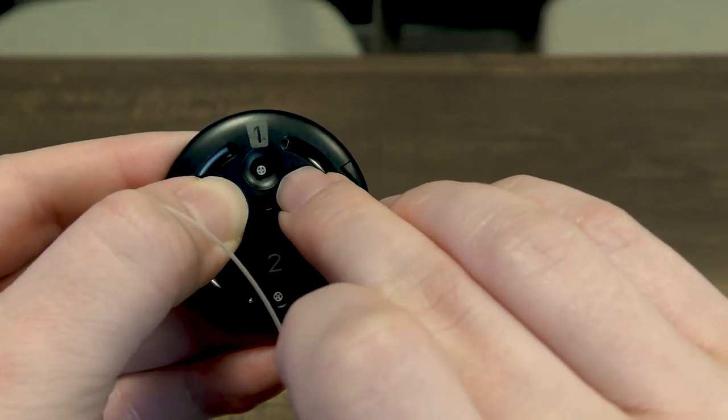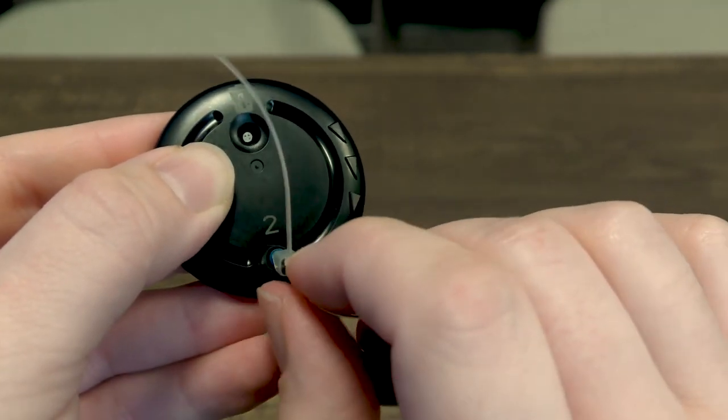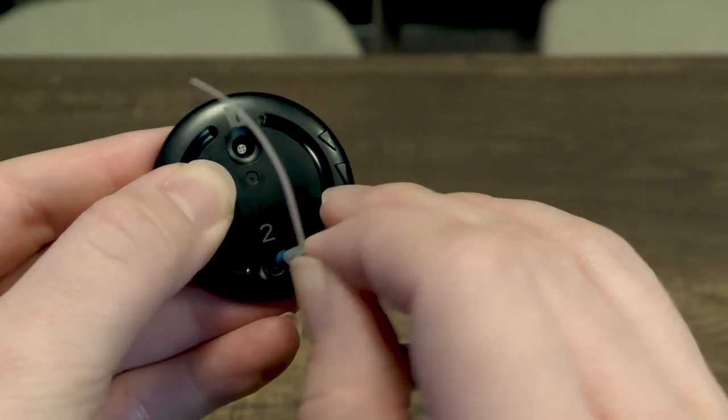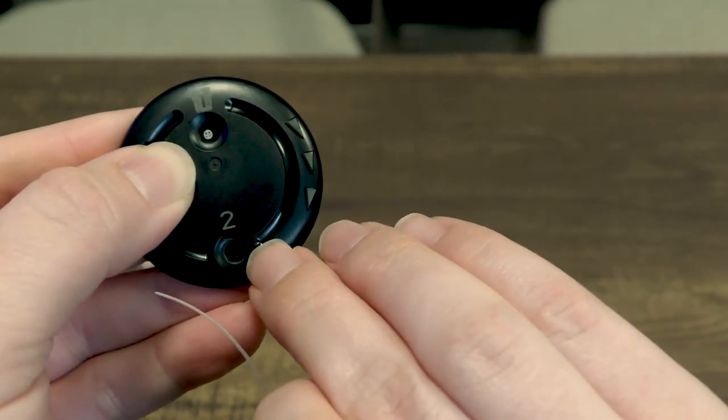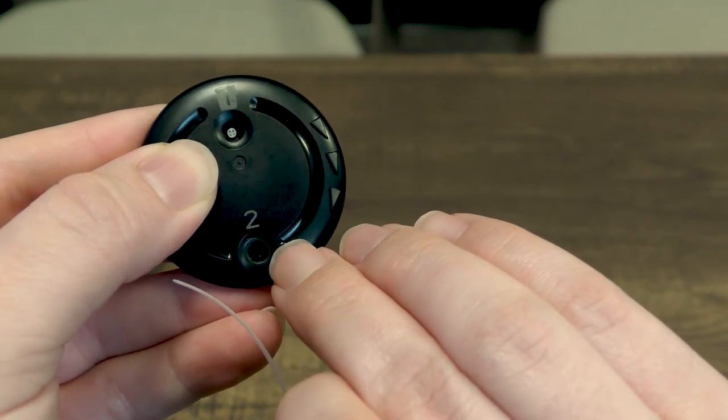Then you just want to place the speaker into the number two spot and you'll feel it click in and then pull it out and now you can see that the new filter is no longer in the number two spot and it is now in the hearing aid.